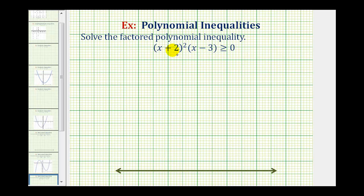We want to solve the given polynomial inequality given in factored form. To solve this means to find all the x values that satisfy this inequality — specifically, when the quantity (x + 2)² times the quantity (x − 3) is greater than or equal to zero.